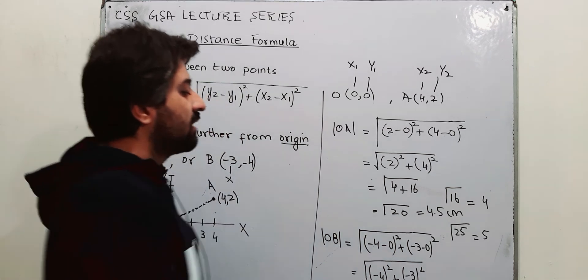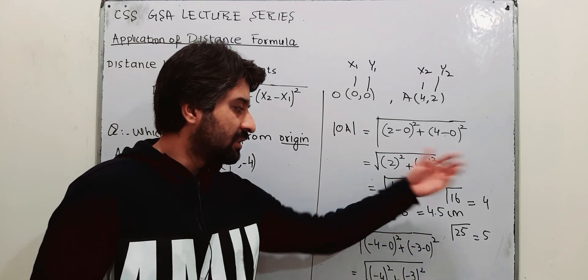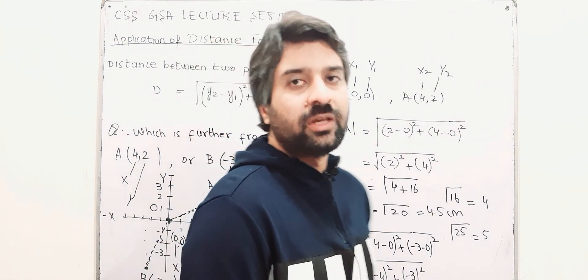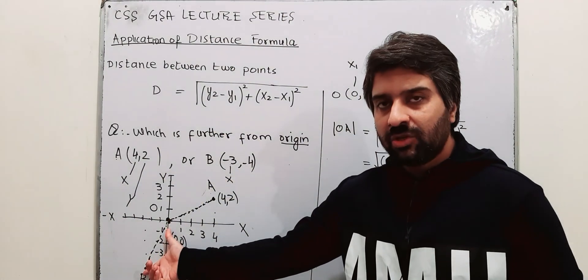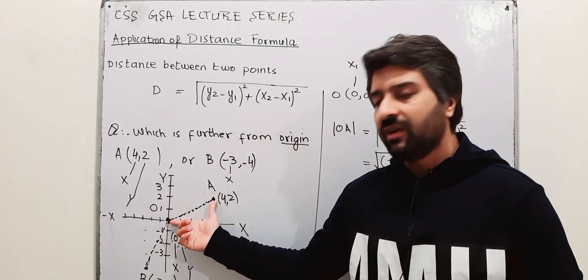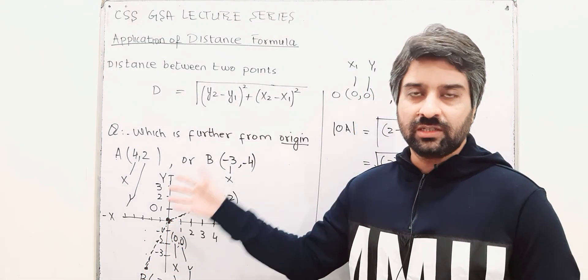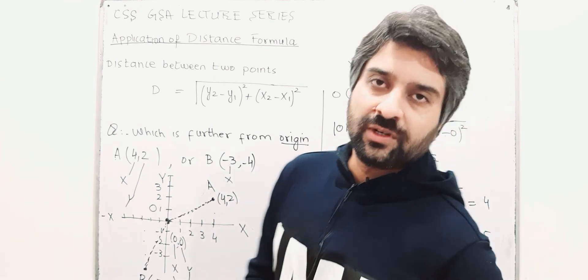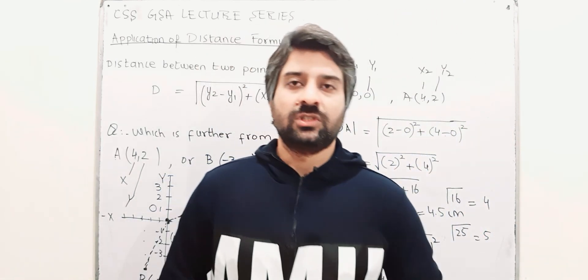So it is obvious that 5 centimeter is further than 4.5 centimeters. So B is further from A. B is 5 centimeter from origin, A is 4.5 centimeter from origin. So the answer is B is further from origin. I hope you have understood the question. Keep watching. Thank you so much.